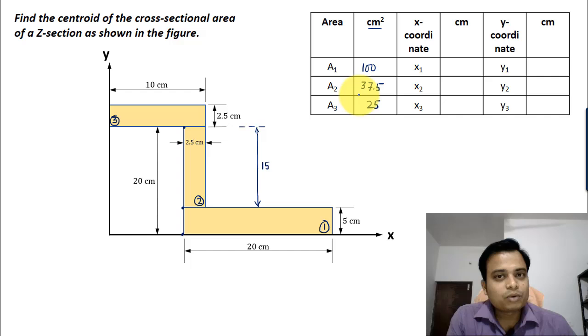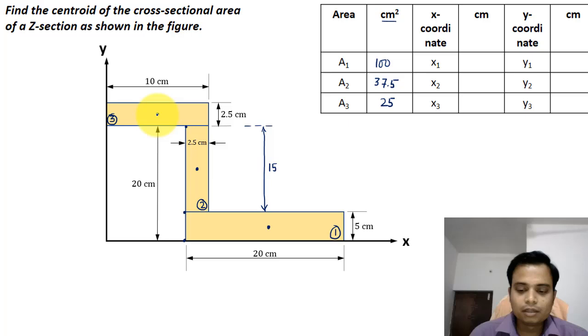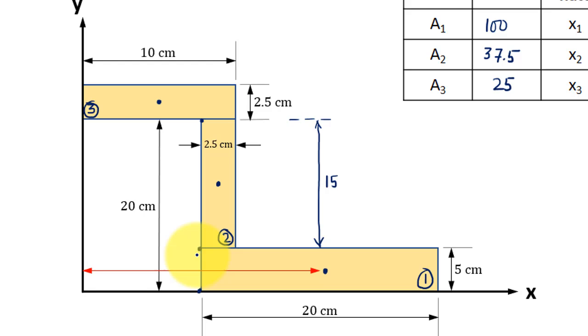Now let's proceed and try to figure out what the corresponding values of x1, x2, and x3 are. As far as this particular rectangle is concerned, its center will be somewhere here. For this rectangle 2, it will be somewhere here, and for rectangle 3, it will be somewhere here.